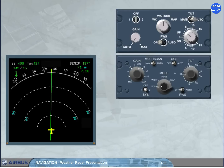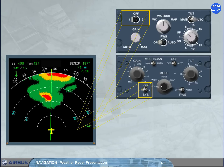We will now look at the different controls and indications of the weather radar. The one/off/two switch selects one radar or turns off both radars. When switched on, the tilt angle indication appears on the ND.